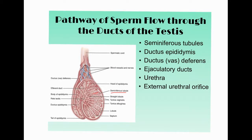After meiosis in the seminiferous tubules, sperm cells move to the epididymis — a series of tubules where sperm mature. After the epididymis, sperm enter the vas deferens, leaving the testicles. Then, not pictured, sperm enter the ejaculatory ducts, then the urethra inside the penis, and finally exit the body through the external urethral orifice.